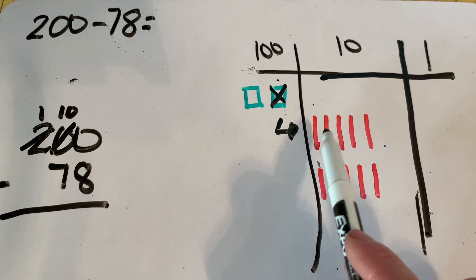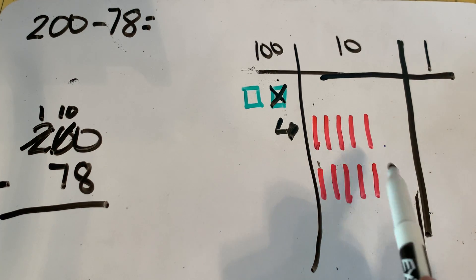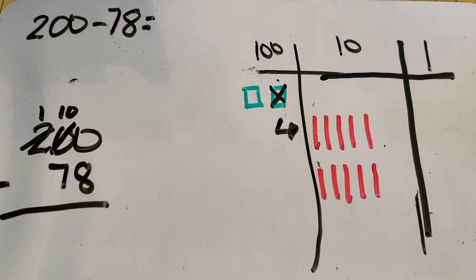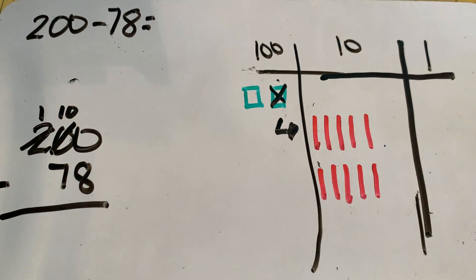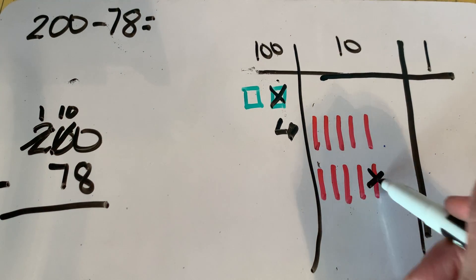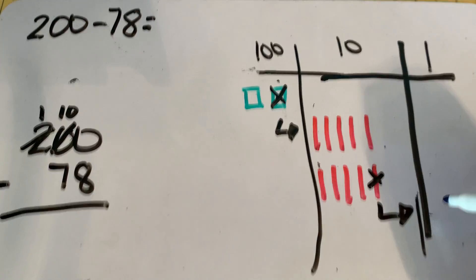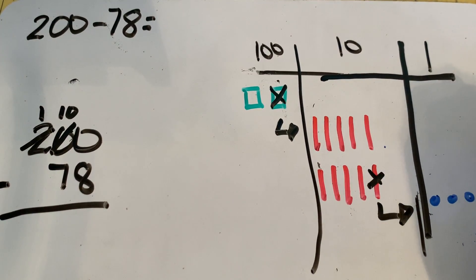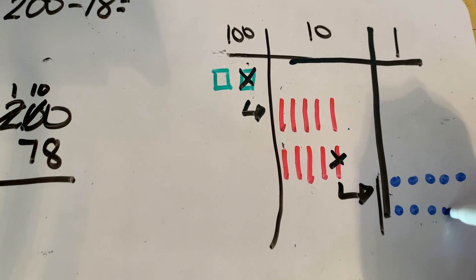One hundred, one ten, one twenty, one thirty, one forty, one fifty, one sixty, one seventy, one eighty, one ninety, two hundred. We're still good. But we're not done yet because I still don't have any ones to subtract the eight from. So we've got to decompose a ten. There are ten ones in one ten, and we count them: two, four, five, six, seven, eight, nine, ten.